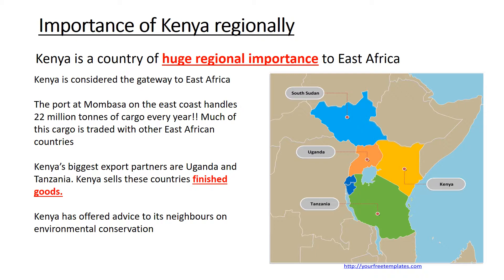Beyond economics, Kenya has also offered its advice, information, and techniques on environmental conservation. Kenya has national parks such as Tsavo and has been somewhat successful in managing the issues there. As a result, it can offer advice to Tanzania and Uganda to protect their wildlife too, giving Kenya a leading role among East African nations in the fight against poaching.